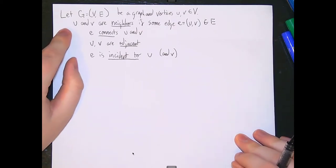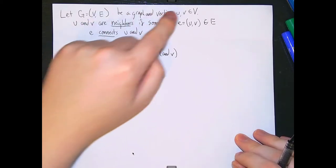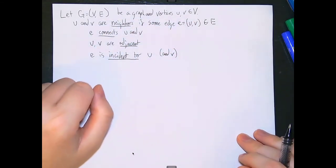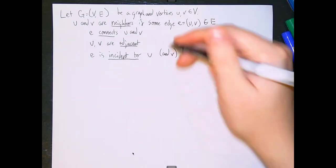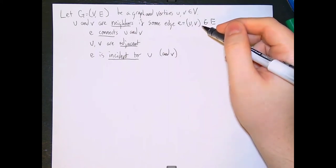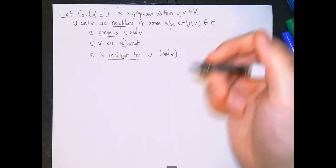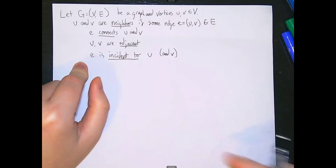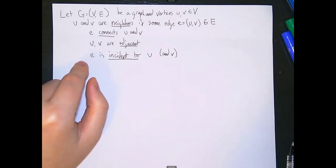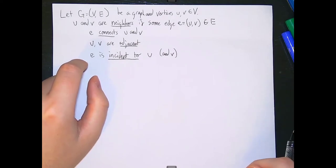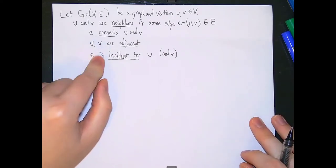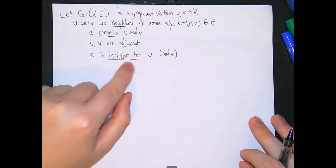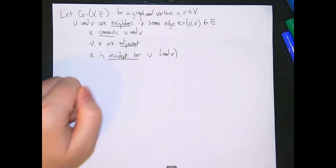We're going to let G = (V, E) be a graph, and let vertices U and V be part of the vertex set for G. We'll say that U and V are neighbors if some edge E that connects U and V exists in the edge set. Some vocabulary: E connects U and V, U and V are adjacent, and E is incident to U and also incident to V, because E is touching both U and V.